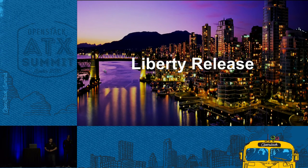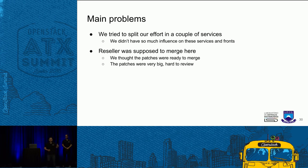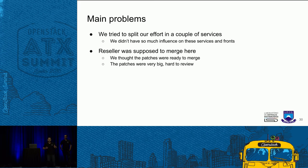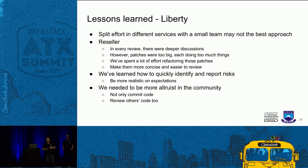Then came the Liberty release with other problems to solve. We tried to split our efforts across a couple of other services that weren't our priority, and we had different lines in those services — that was very difficult at the beginning. We were also responsible for implementing Reseller, which was targeted to merge in Liberty after being postponed from Kilo. We thought the patches were very big, mature, and ready to merge, but they weren't as good as we thought — they were very big and very hard to review. As a lesson learned in Liberty, splitting efforts when you have a not-very-experienced team may not be a good way. We had new members who weren't experienced and started new fronts, which gave us poor results at the beginning.